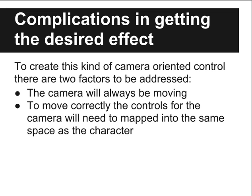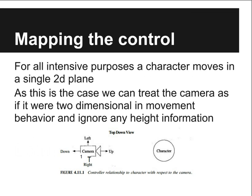There are two issues we need to deal with when making a third-person camera. The first is that the camera is always moving, and the second is that we need to map the camera into the world coordinates. A character can be expected to move in a single plane most of the time, so we don't need to be concerned with the height information.